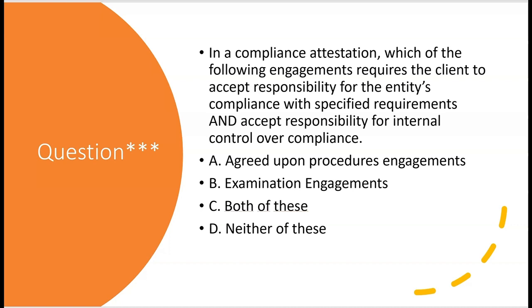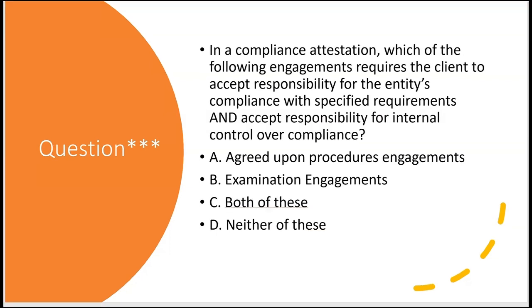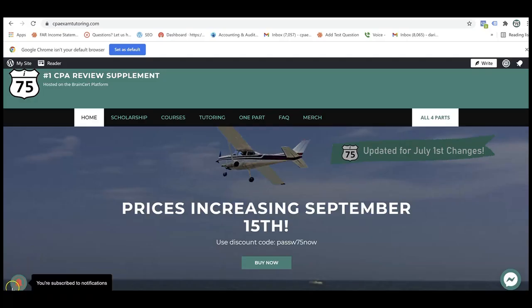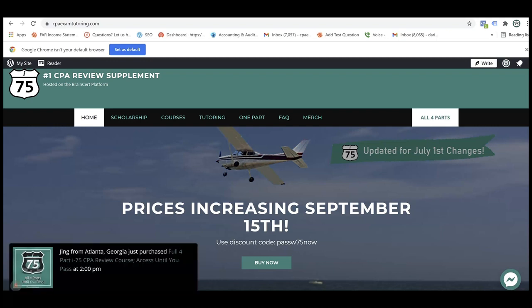Here's a practice question: In a compliance attestation, which engagements require the client to accept responsibility for the entity's compliance with specified requirements and accept responsibility for internal control over compliance? Leave your answer in the comments. If you need more help with compliance attestation or any part of the CPA audit exam, go to cpaexamtutoring.com for i-75, the number one CPA review supplement, hosted by Darius Clark.